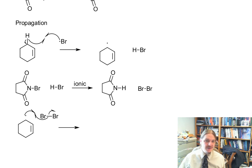And so we can generate cyclohexenyl bromide and we generate our bromine radical, which then can go back into the first propagation step.